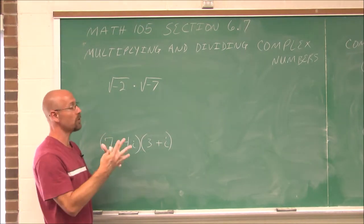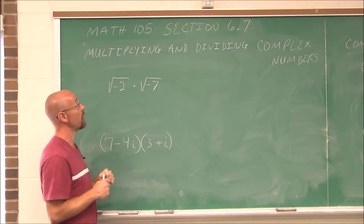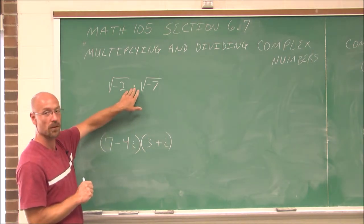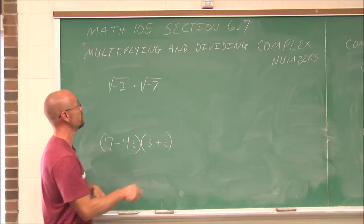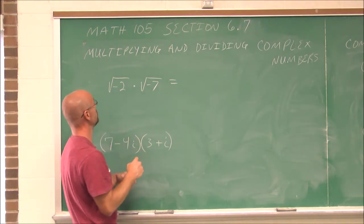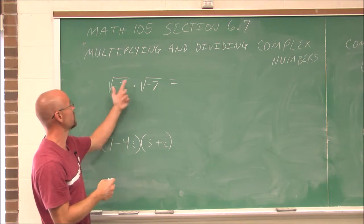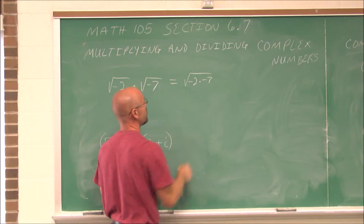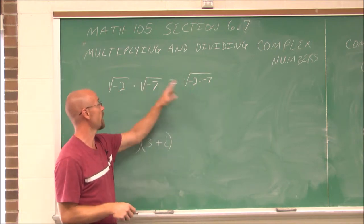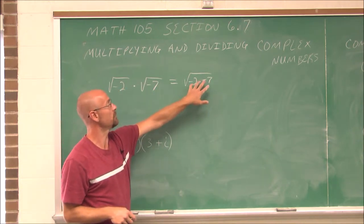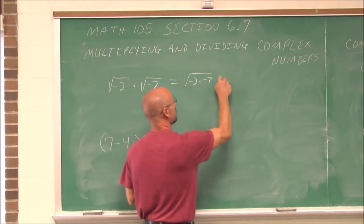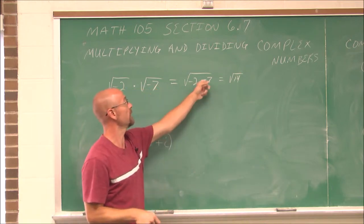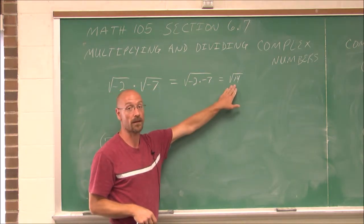Because if we don't, we're going to make an error. If we don't take out that i first, I'm going to show you how to do it the wrong way — so don't copy me. If we use the product rule and ignore the fact that we have negatives under the radical, negative 2 times negative 7 is 14, giving us the square root of positive 14. This is not the correct answer.